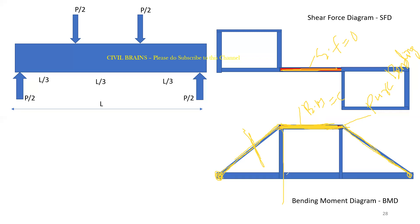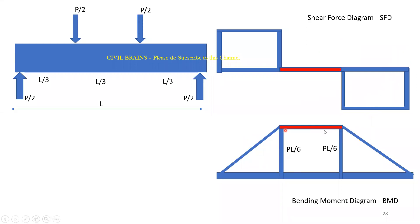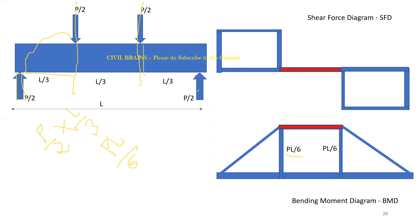The bending moment value in the constant zone is PL/6. This is derived as: reaction P/2 acts over a distance of L/3, so the moment = (P/2) × (L/3) = PL/6. The same applies on the other side. So the constant bending moment in the pure bending zone equals PL/6.